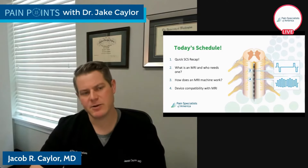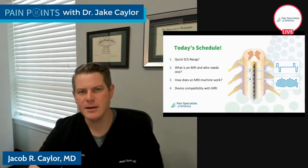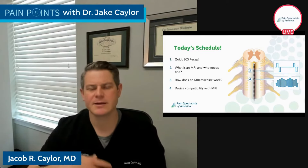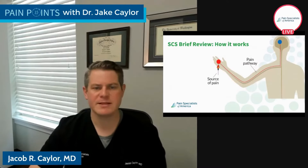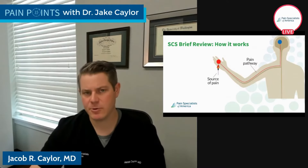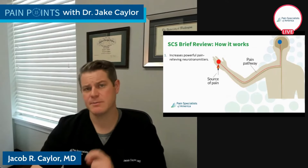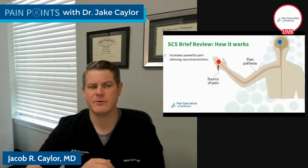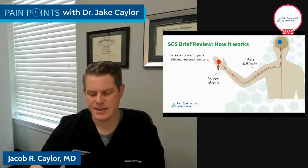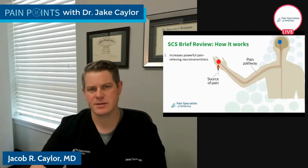Either way, spinal cord stimulation is broken up into two parts: the trial and the permanent implant and the programming that happens thereafter. When we think about how spinal cord stimulation works, there are three big ways. The first and most important way is that it actually increases powerful pain-relieving neurotransmitters — and that happens both in the brain, in the spinal cord, and at the level of inflammation within the spinal cord itself.